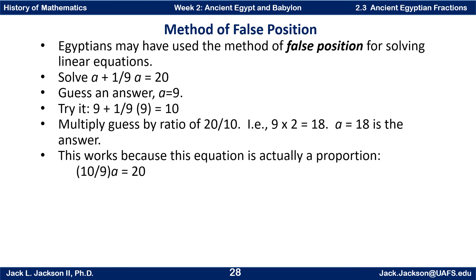They also sometimes solved equations by a method called false position. For example, to solve: a plus one-ninth times a equals 20 — or as they would have said it: take a quantity, add to it one-ninth of that quantity, and the result is 20, what is the quantity? The idea of writing equations with symbols and variables came much later.